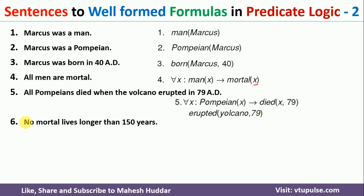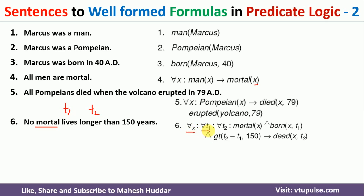The next fact is: No mortal lives longer than 150 years. Here we need a comparison. Suppose a mortal is born at time T1 and the current time is T2. If T2 minus T1 is greater than 150, then the mortal is dead at time T2. So the representation is: for all X, T1, T2 — if Mortal(X) and Born(X, T1) and (T2 − T1 > 150), then Dead(X, T2).